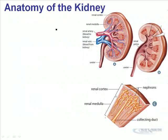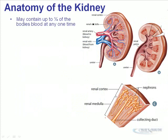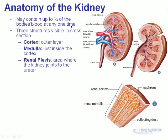Now, when we look at the kidney, this is where the waste gets removed. On a macroscopic level it looks pretty simple, but it can actually contain up to one quarter of the body's blood at any one time. These organs are just two fist-sized lumps, so the fact that they can contain up to one quarter of our blood volume is pretty impressive.